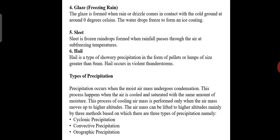Next is freezing rain or glaze. Glaze is formed when rain or drizzle comes in contact with the cold ground at around 0 degrees Celsius. The water drops freeze to form an ice coating.